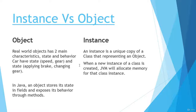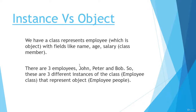Many people take object and instance as the same thing, but there is a little difference between them. An object represents the state and behavior of the class, and an instance is the copy of the class that represents an object. Let's discuss an example that will help us understand object and instance.